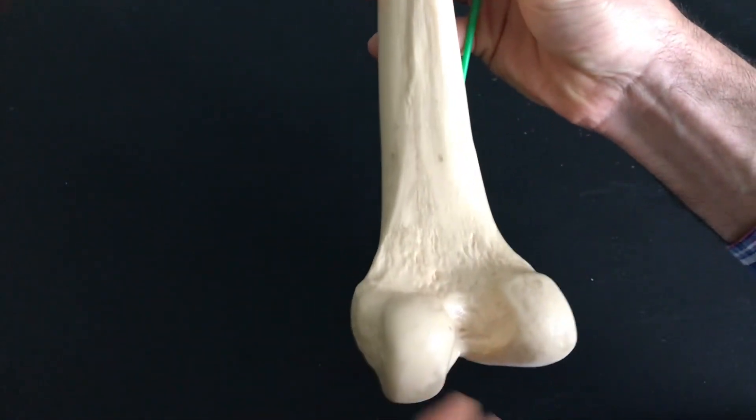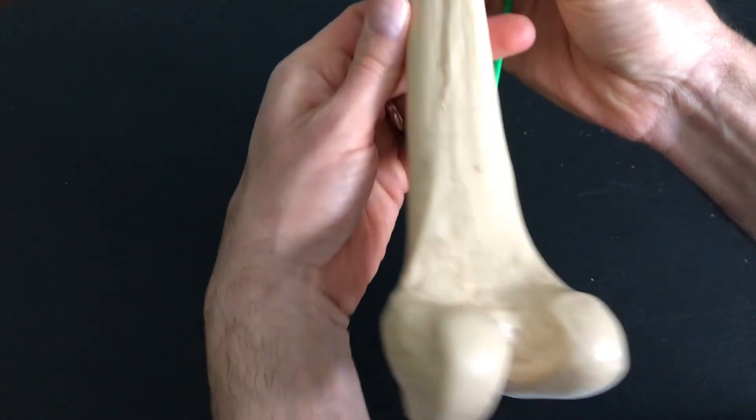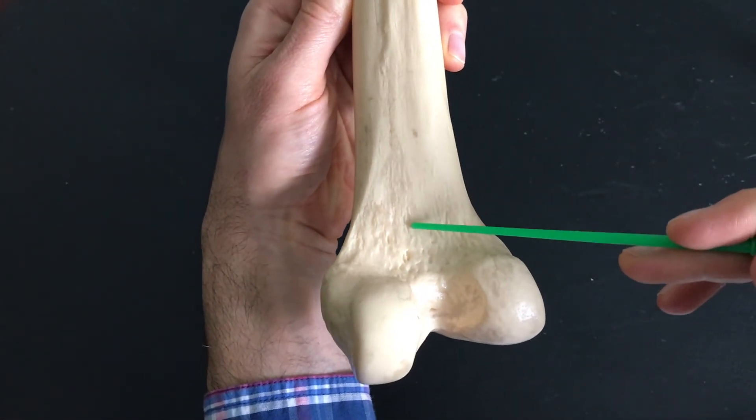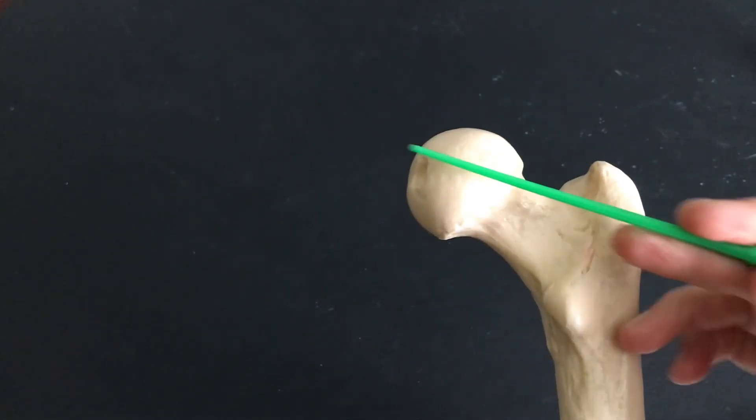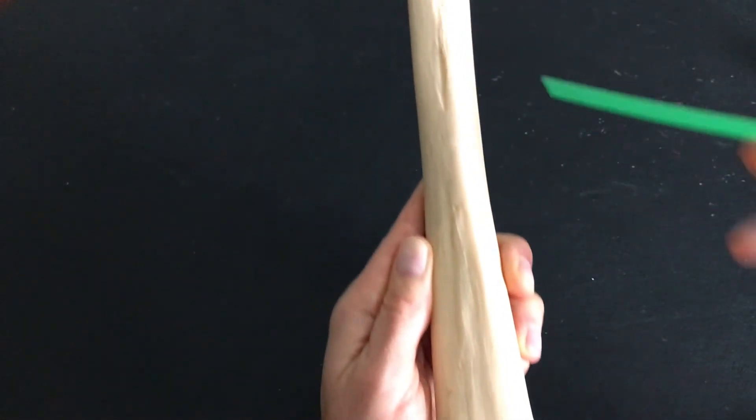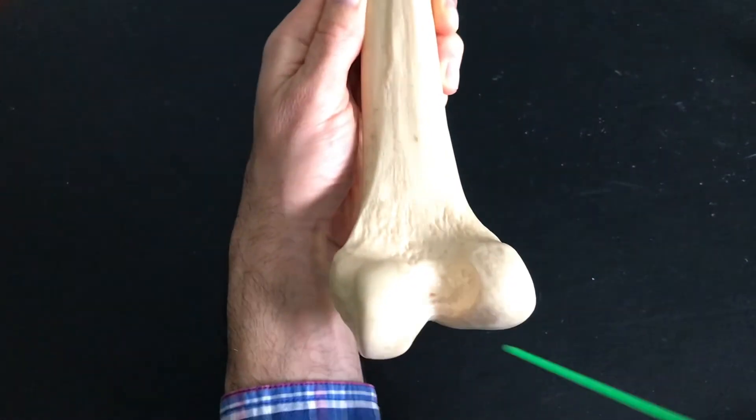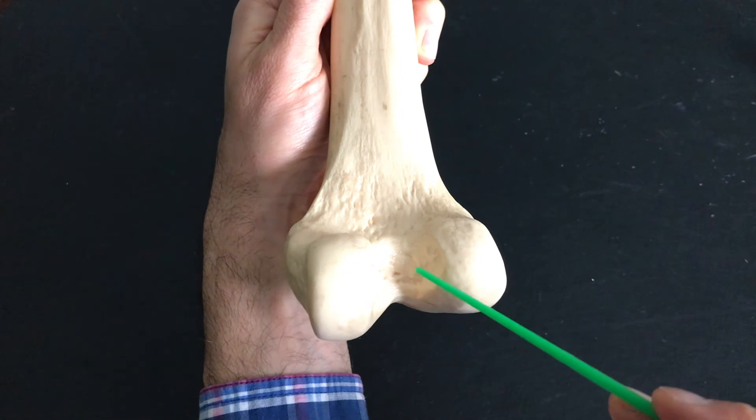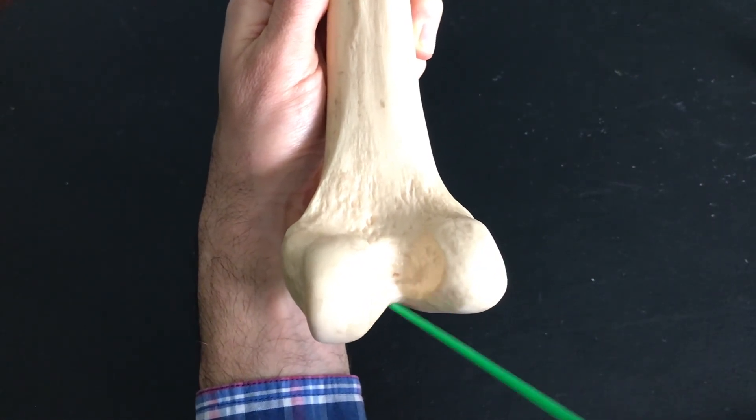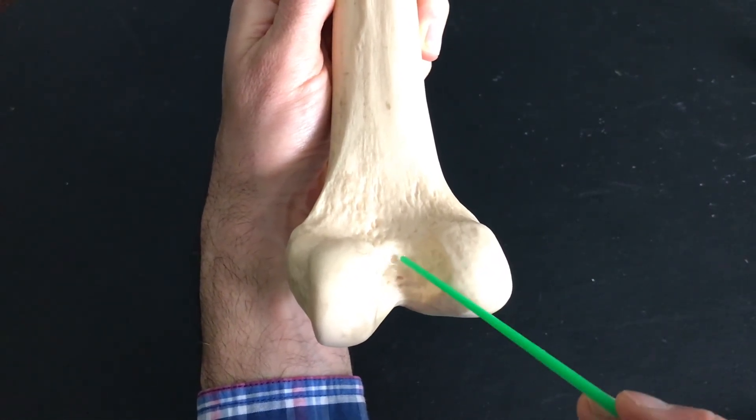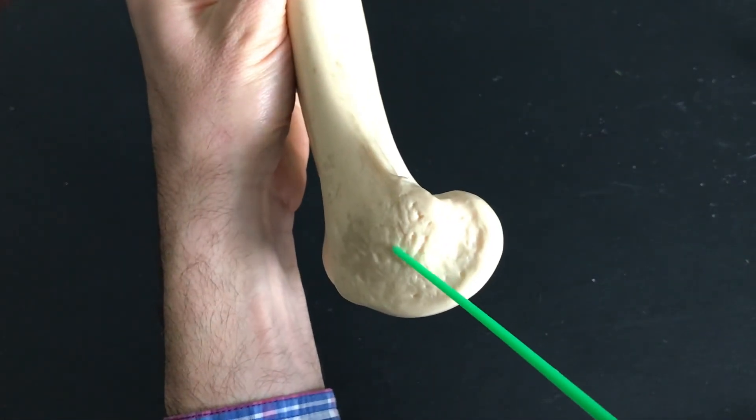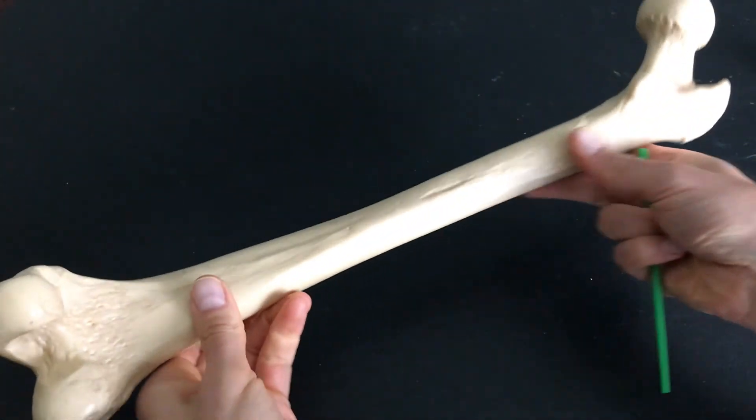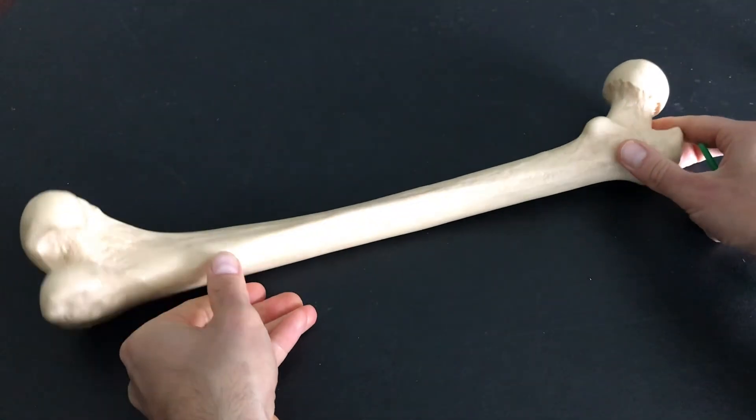From here, we come all the way down towards the bottom. And what we're looking at is the popliteal surface. And again, since this head is going to be facing medial, and we know we're looking at the posterior side because of the linea aspera. That makes this the medial condyle. That makes this the lateral condyle. This is what we call the intercondylar fossa. And again, we're going to have medial epicondyle, lateral epicondyle. This is the posterior side of the femur.